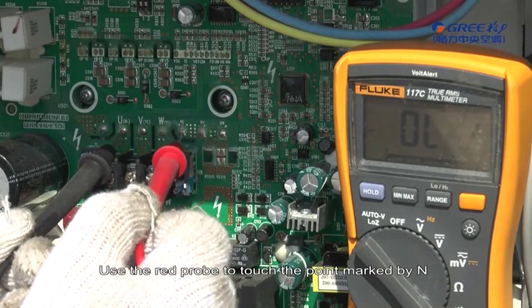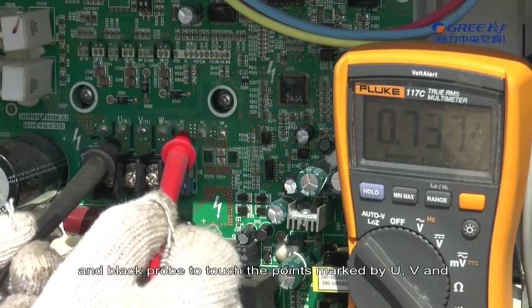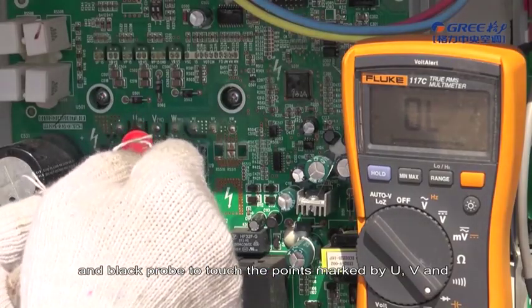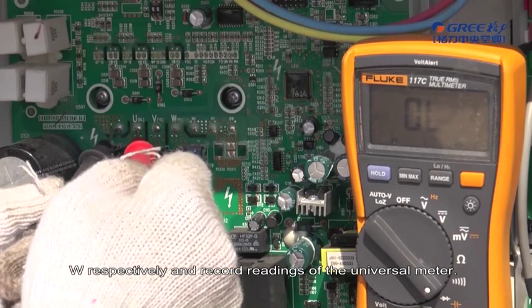Use the red probe to touch the point marked by N and black probe to touch the point marked by U, V, and W respectively and record readings of the universal meter.